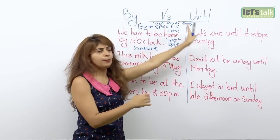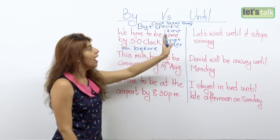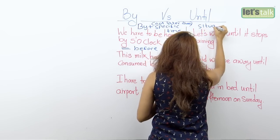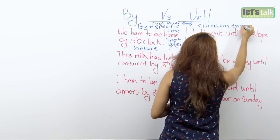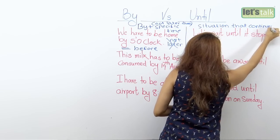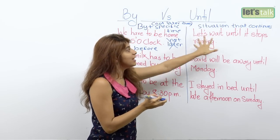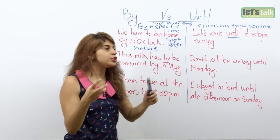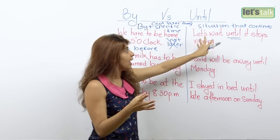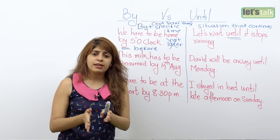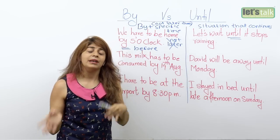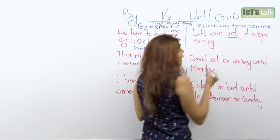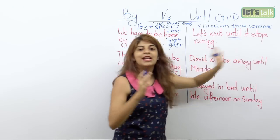Now let's understand the word 'until'. 'Until' is used to talk about a situation that continues — the duration. For example: 'Let's wait until it stops raining.' You use 'until' because you are talking about a continuing situation — it is raining — so you wait until it stops. In modern English, many people use 'till' instead of 'until', so you can also say: 'Let's wait till it stops raining.'